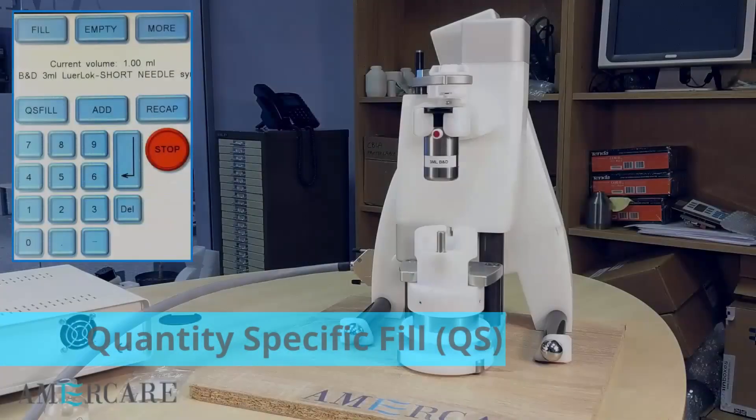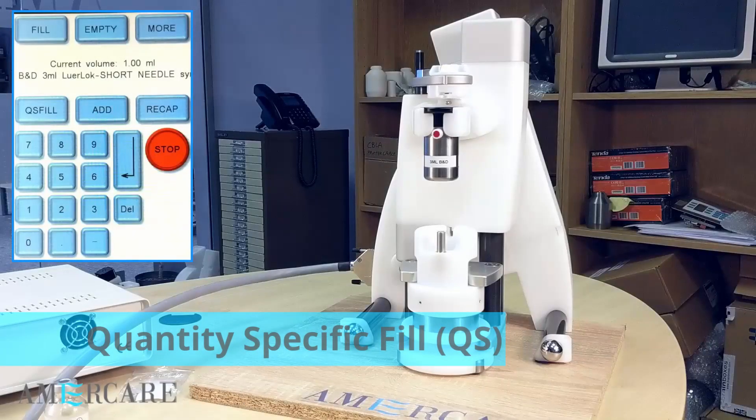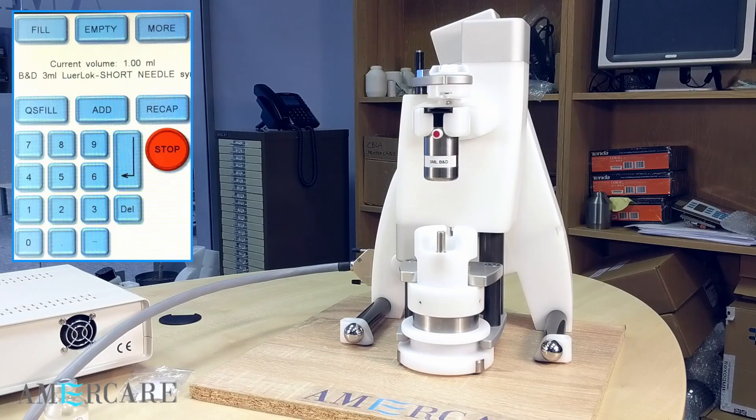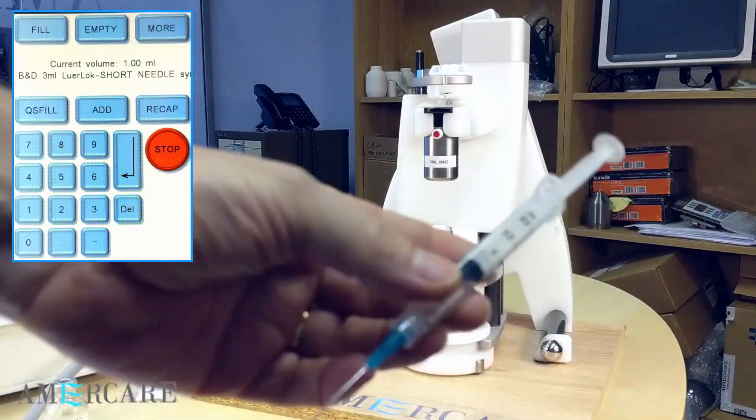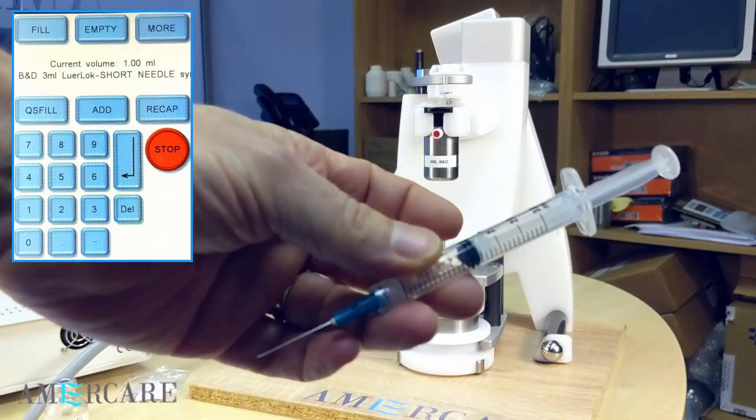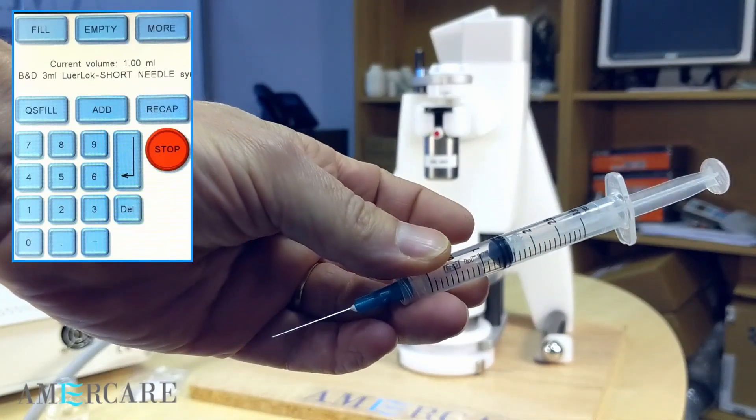Quantity specific or QS fill. This function allows the unit to add product to a pre-filled syringe. For example, we can pre-fill a syringe with 1.5 milliliters of saline ready to add product.